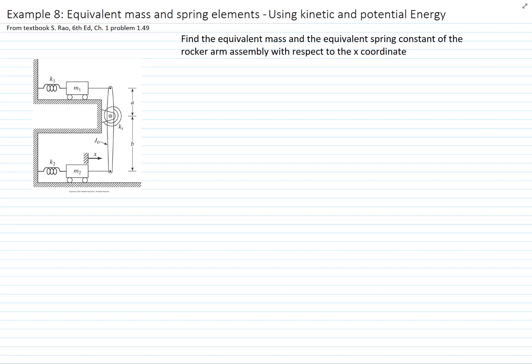In these problems we want to find the equivalent mass and spring element using kinetic and potential energy. The system is composed of two masses that move linearly, M1 and M2, and they are fixed to K1 and K2 respectively. We also have a bar that is rotating about point O, and it has a rotational spring. That bar has a mass moment of inertia with respect to point O of J sub O.